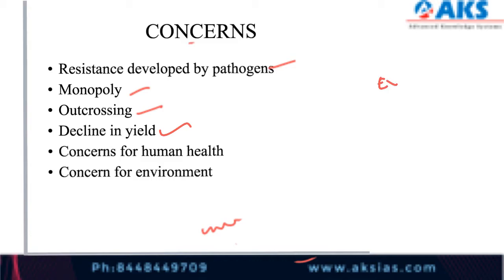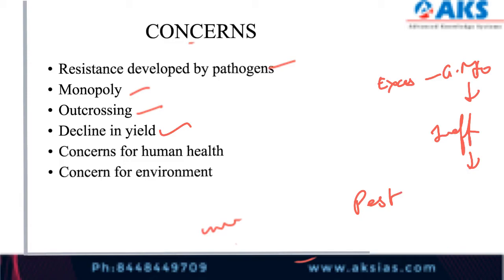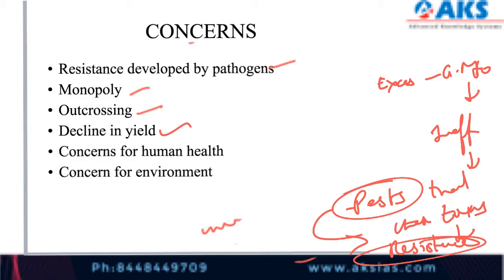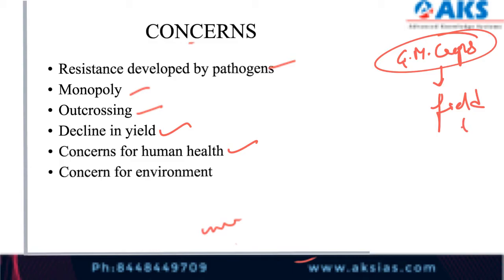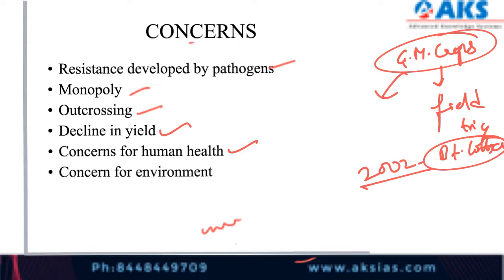The next concern is decline in yield. Excessive production of genetically modified foods can become ineffective over time because pests that these toxins used to deter might eventually develop resistance. There are also concerns for human health — that is the reason we have not allowed GM crops without proper field trials in India. Only Bt cotton, which is non-edible, was approved in 2002.